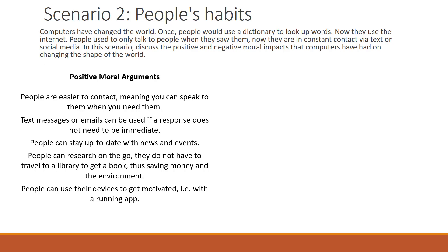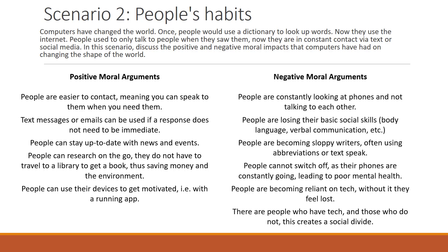Some of the negative arguments: people are constantly looking at phones and not talking to each other, which is affecting people's social skills — they are losing basic skills such as body language and verbal communication. People are becoming sloppy writers, often using abbreviations or text speak when writing essays. People often cannot switch off; rather than relaxing, their phones are constantly going, and this can lead to poor mental health. People are becoming too reliant on tech, and without it they feel lost — think about how strange it feels on holiday with no phone signal. There is also a social divide between those who have technology and those who do not, which can create conflict between the two sides.